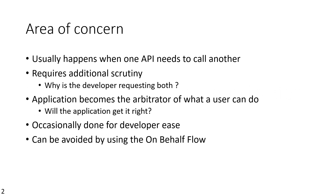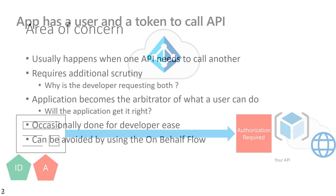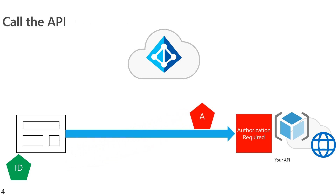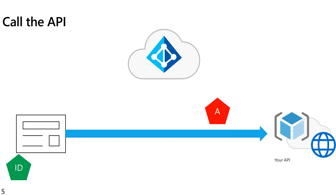So when one API calls another, what happens is: your API here on the right gets a token from the calling application that allows that calling application to access your API. Inside of that API, as a delegated permission token, will be the identity of the user. Your API will go ahead, check the access token is valid, check the user is constrained within what the user is allowed to do, and if everything's correct it will proceed.